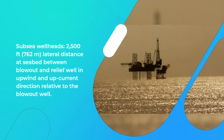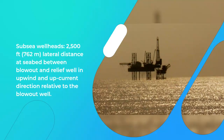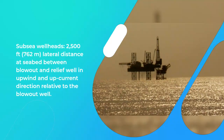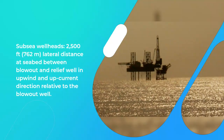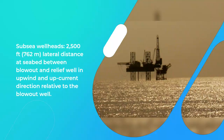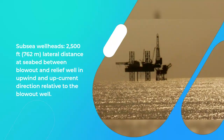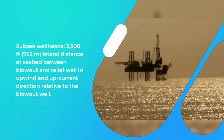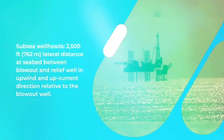For subsea wellheads, a lateral distance of 2,500 feet (762 meters) is required at the seabed between the blowout and relief well, in the upwind and up-current direction relative to the blowout well.